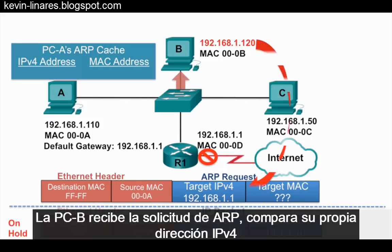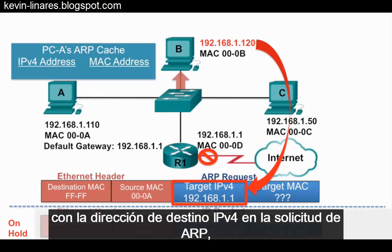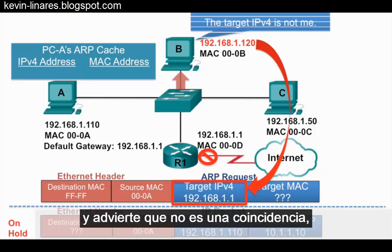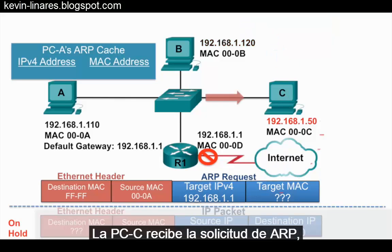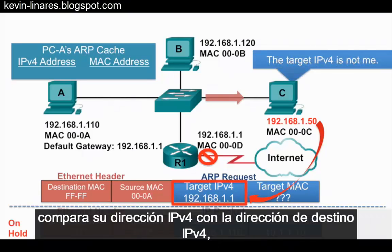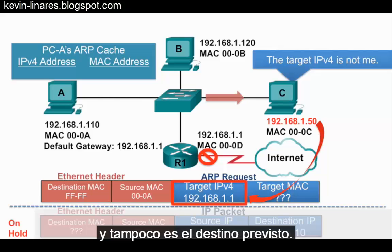PCB receives the ARP request, compares its own IPv4 address against the target IPv4 address in the ARP request, and notices it is not a match, so it is not the intended target. PCC receives the ARP request, compares its IPv4 address against the target IPv4 address, and it is not the intended target either.